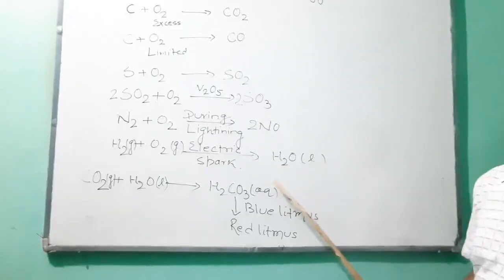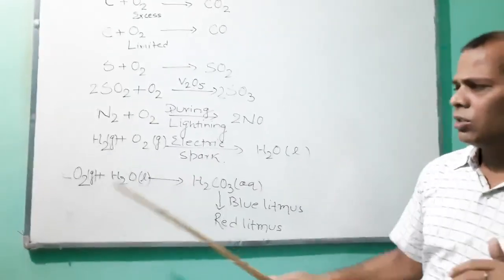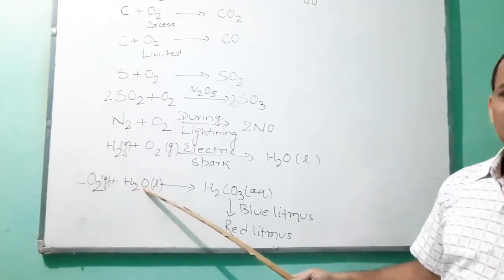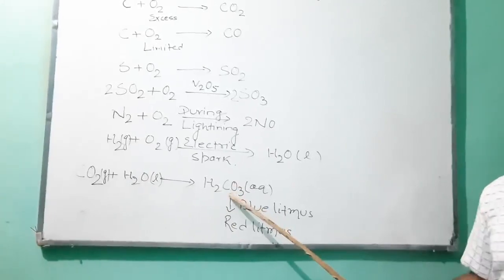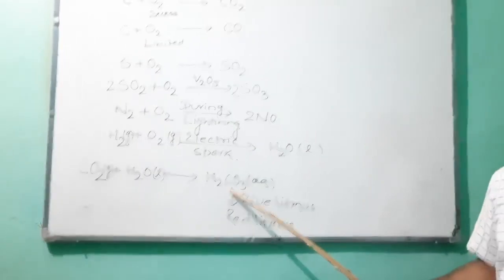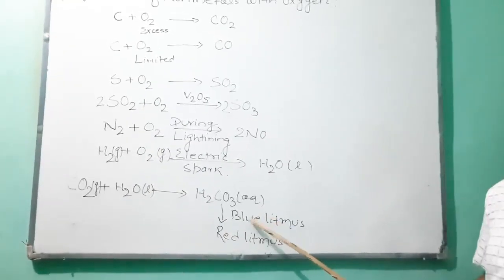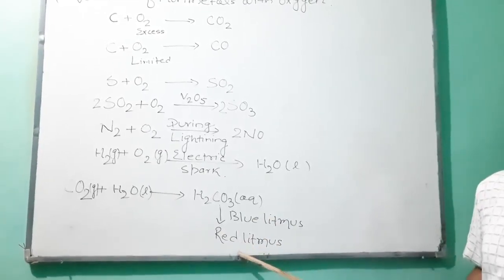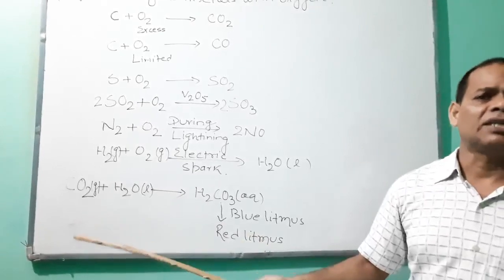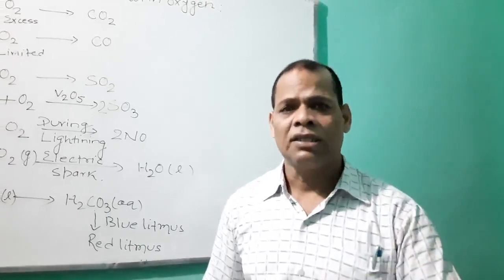How do we determine whether a non-metallic oxide is acidic or not? Carbon dioxide, when passed through water under pressure, forms carbonic acid. When an aqueous solution of carbonic acid is passed through blue litmus, it turns red litmus.